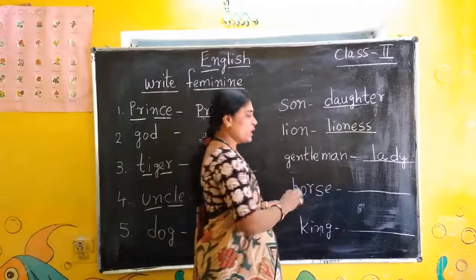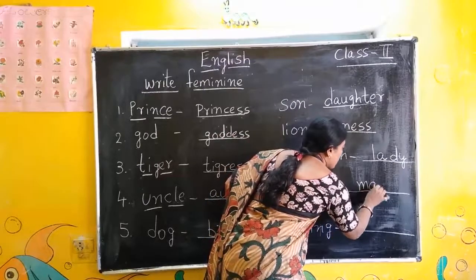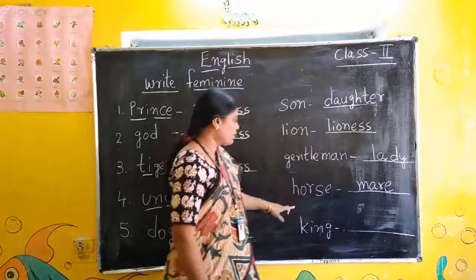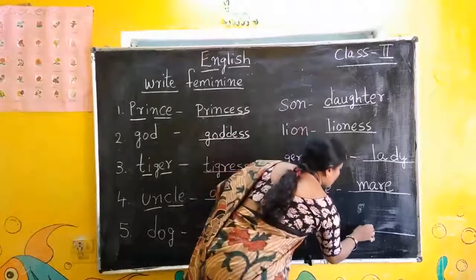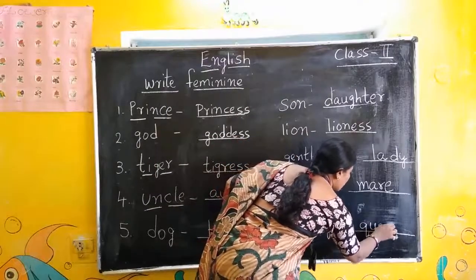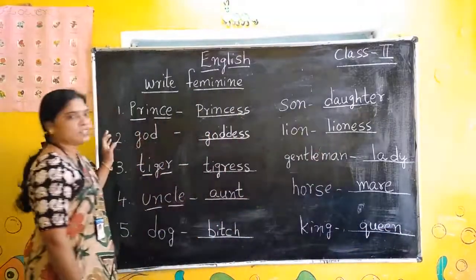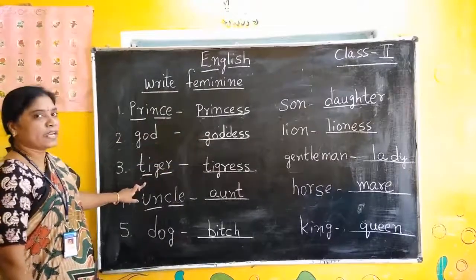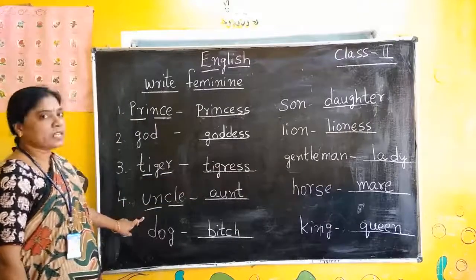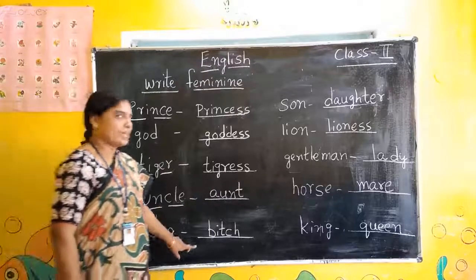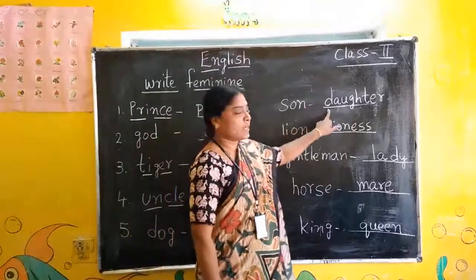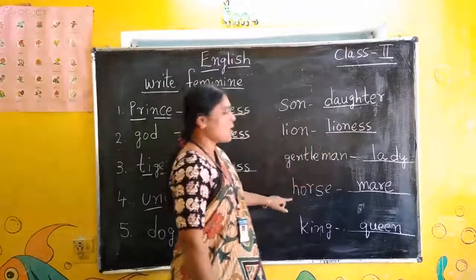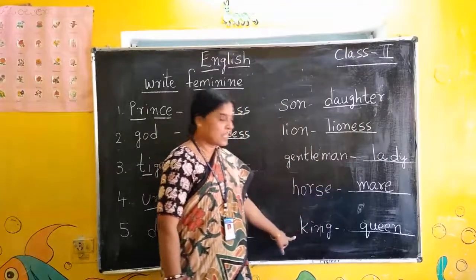Horse — totally it will change. Mare: M-A-R-E. King — Queen: Q-U-E-E-N. One more time: Prince — Princess. God — Goddess. Tiger — Tigress. Uncle — Aunt. Dog — Bitch. Son — Daughter. Lion — Lioness. Gentleman — Lady. Horse — Mare. King — Queen.